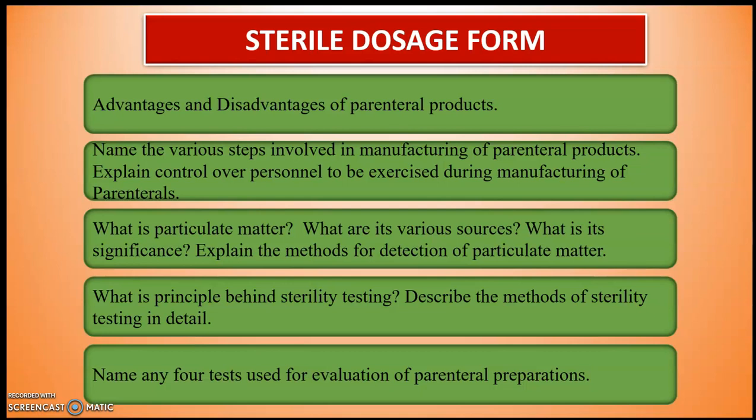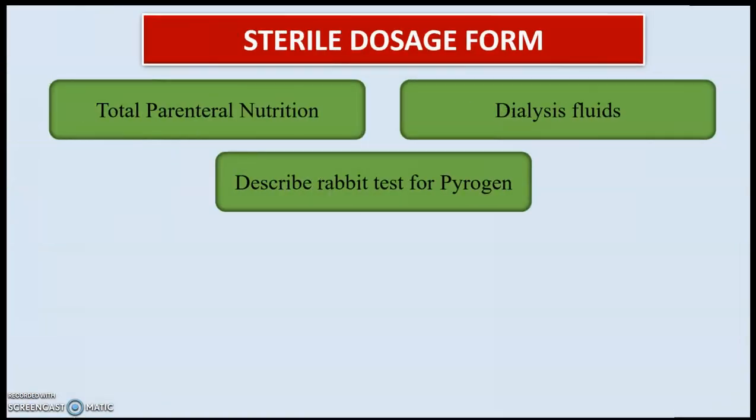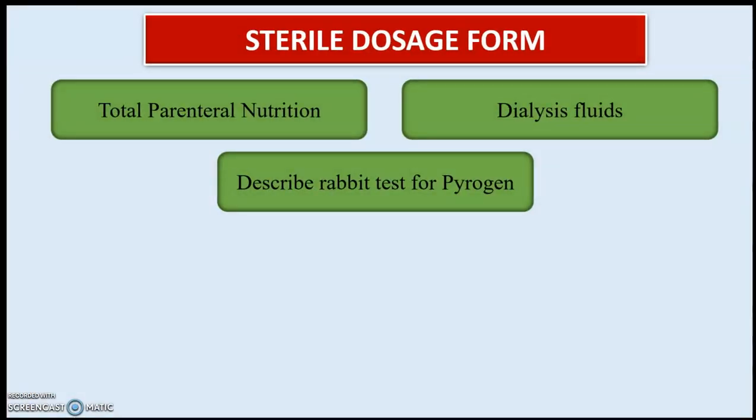The next question is: what is the principle behind sterility testing? Describe the methods of sterility testing in detail. Then, name any four tests used for evaluation of parenteral preparations. The next important point in this chapter is total parenteral nutrition, then dialysis fluid. A very important point is the pyrogen test — describe the rabbit test for pyrogen. These are the important points and questions from this chapter.